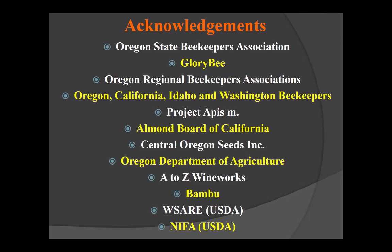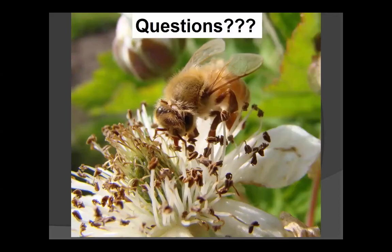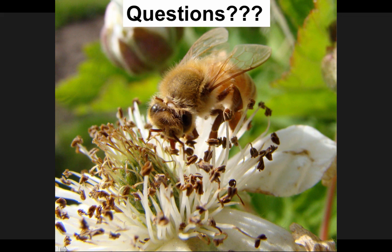I'd like to acknowledge all the support we've received for our research program over the last 10 or more years. Now I have time for questions. The first question: what is corbicular pollen? Corbicular pollen is the pollen collected by honeybees in their pollen baskets on their hind legs. You can see them collecting pollen when they visit flowers and come back to the hive with pollen balls hanging on their hind legs. Corbicular is the scientific term for the pollen baskets.